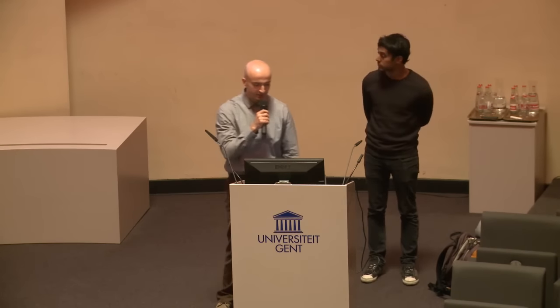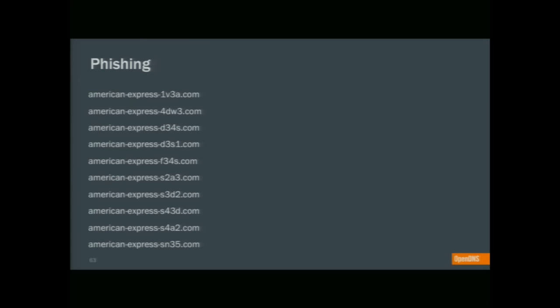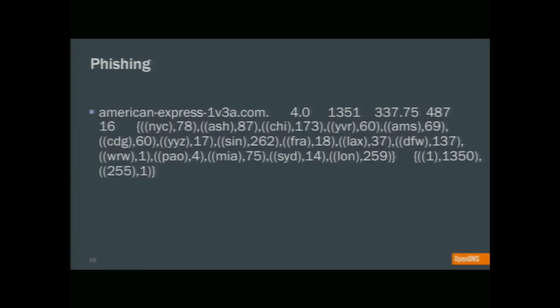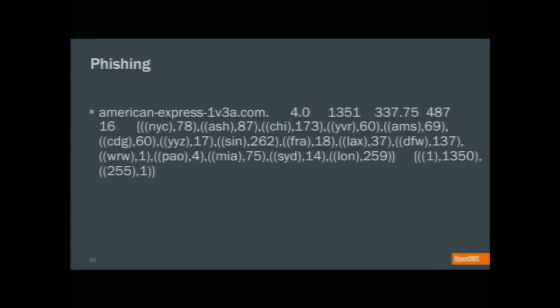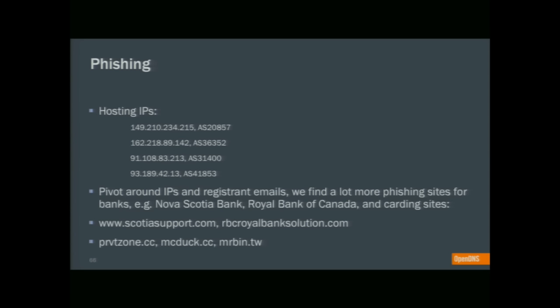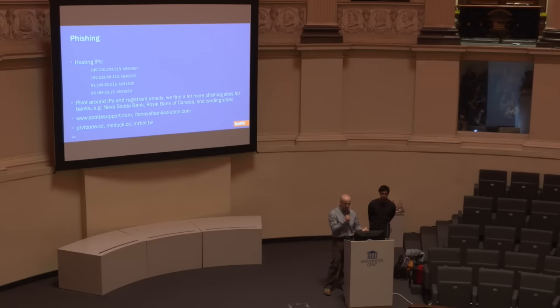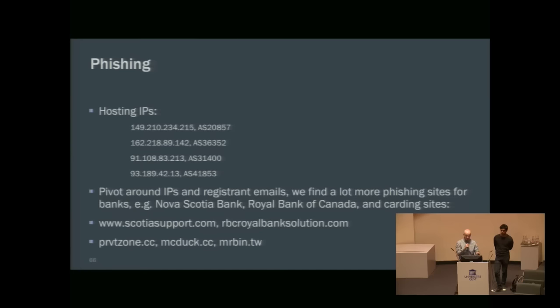The final set of malicious domains we want to discuss is phishing. We caught an Amex phishing campaign a couple weeks ago — the initial spike as it happened in our logs. The distribution was around 1,300 queries from 400-plus IPs asking 16 of our resolvers, quite widespread globally. The domains were hosted all over the place. Pivoting around IPs and registrant emails revealed Nova Scotia Bank phishing, Royal Bank of Canada phishing, and other fraud card sites registered with emails like privatezone, mcduck.cc, and mrbin.dw.